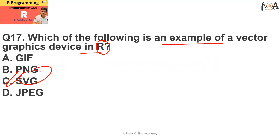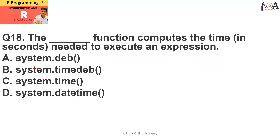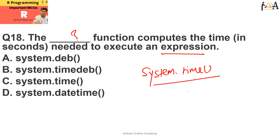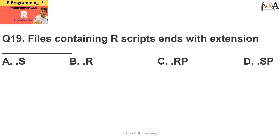Question number 18: what function computes the time in seconds needed to execute an expression? The answer is system.time(). It is a function that calculates the time in seconds to execute an expression in R. Option C is the correct answer.